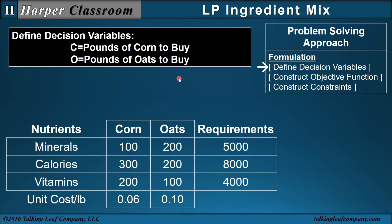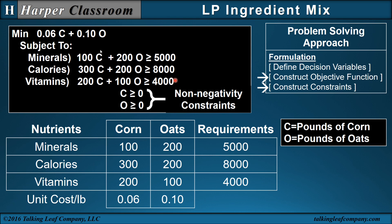Let's formulate the problem. The first step in formulation is always to define your decision variables. Let C be the pounds of corn to buy, and O the pounds of oats to buy. Then use the definition of the variables and the definition of the problem together to construct your objective function. The objective function is: take the unit cost per pound times how many pounds — that's your total cost. I want to minimize my cost.